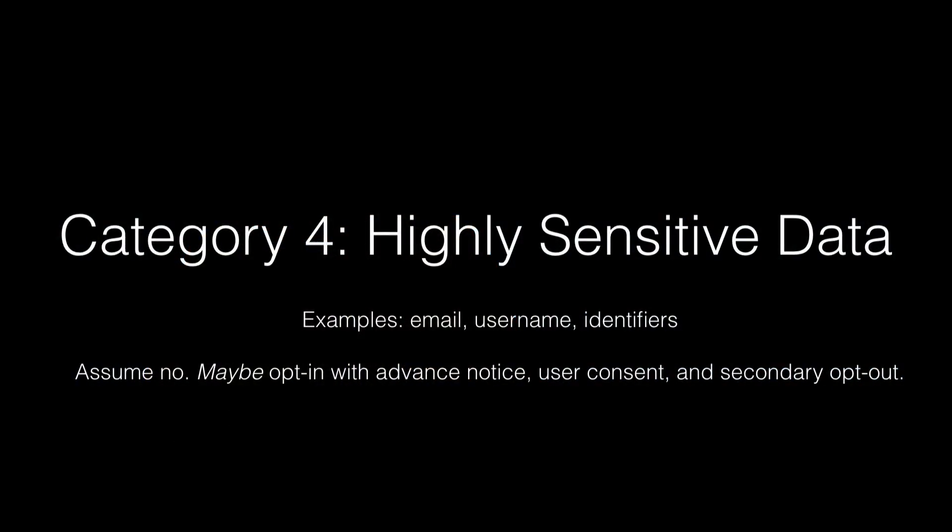The fourth category is stuff that we basically don't collect — highly sensitive data. Things that are identifying: email, username. Not just personally identifying, but generally identifying. In general, you should assume at Mozilla that you can't collect these. We do in one case, and it's opt-in with advance notice, user consent, and secondary opt-out.